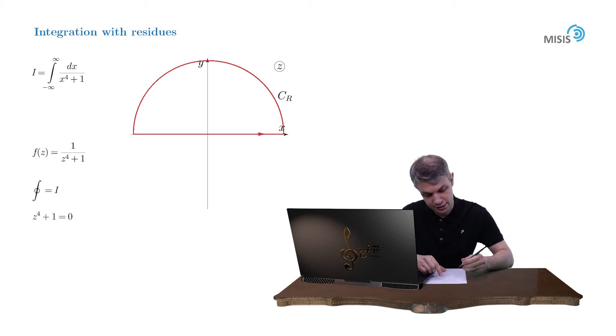It's an elementary equation and its solution reads e to iπ by 4 plus iπn by 2, where n is some integer. This equation has four first order roots and as a result, our function has four simple poles. The poles positioned inside our contour are z1 equals e to iπ by 4 and z2 equals e to 3πi by 4. Here they are.